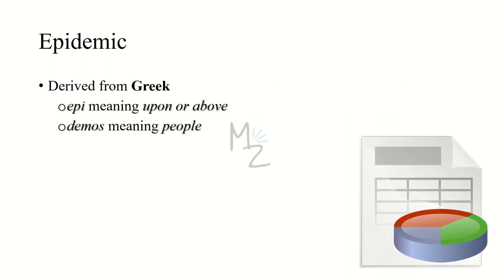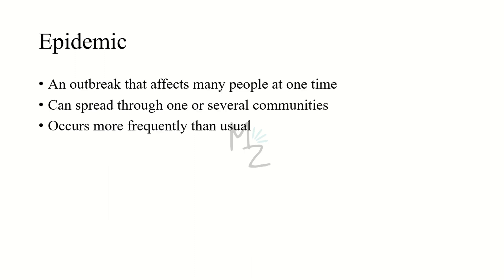The next epidemiologic term is epidemic. It is also derived from Greek, composed of two parts: 'epi,' meaning 'upon' or 'above,' and 'demic' derived from 'demos,' meaning 'people.' Epidemic is an outbreak that affects many people at one time, and it can spread through one or several communities. An infection is epidemic if it occurs much more frequently than usual.